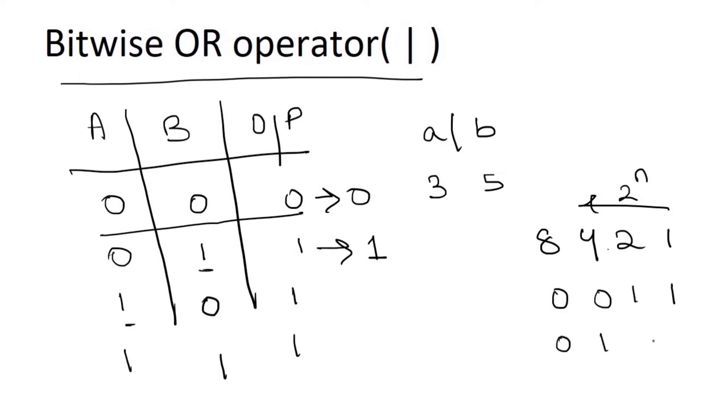The OR operation will be: 1 and 1, both inputs are 1 so the output is 1. Then 1 and 0, one of them is 1 so the output is 1.